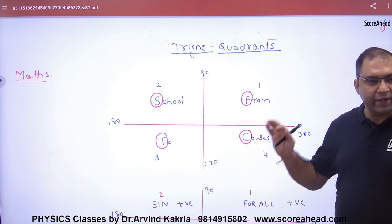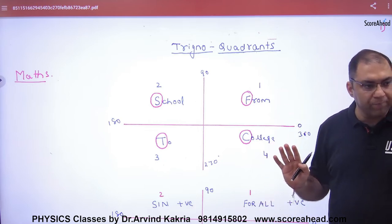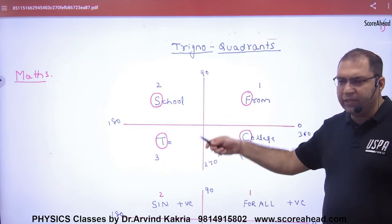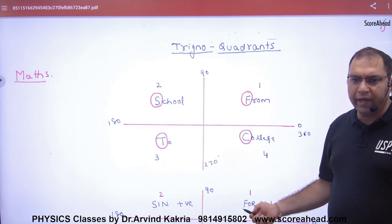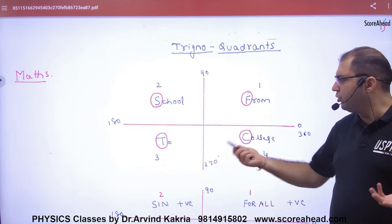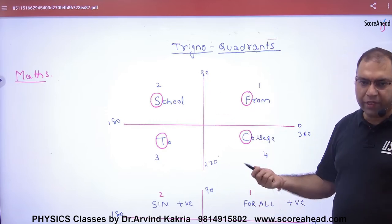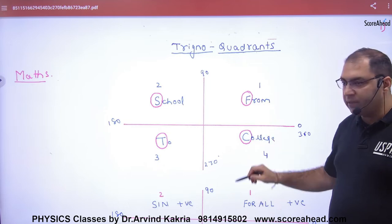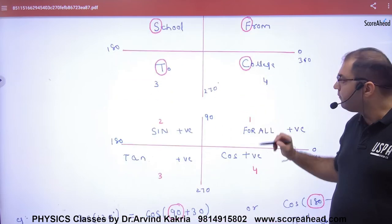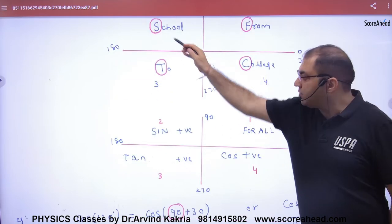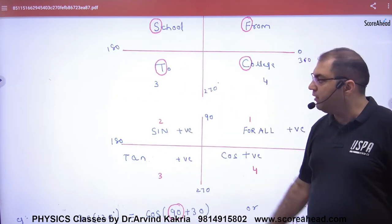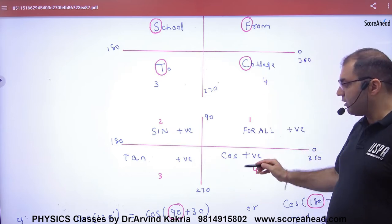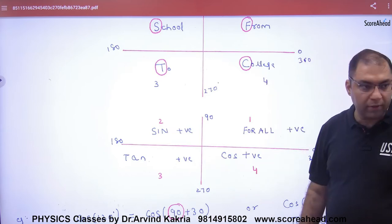Write the standard angles and remember the mnemonic: F means 'For all,' S means 'Sine,' T means 'Tan,' and C means 'Cos.' This helps you remember which trigonometric functions are positive in each quadrant.